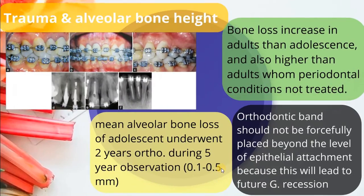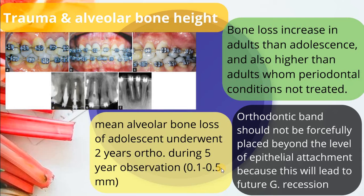Regarding gingival trauma and alveolar bone height, there is a mean alveolar bone loss in adolescents during a five-year observation of 0.1 to 0.5 mm. Bone loss is higher in adults than adolescents, and even higher in adults whose periodontal conditions are not treated. It is mandatory that patients with orthodontic appliances have periodontal screening before, during, and after treatment. Orthodontic bands should not be forcefully placed beyond the level of epithelial attachment, as this leads to future gingival recession.